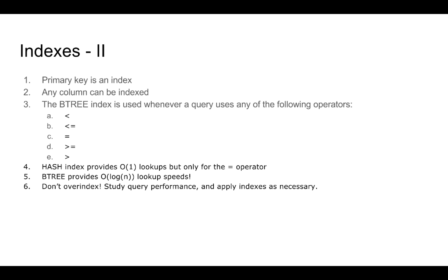In the previous modules, when we were creating primary keys on our tables, a primary key is also an index. A good primary key is a set of columns that uniquely identifies a row in a table, but it is also a set of columns used very frequently to query for data in that table. So a primary key is both a unique constraint and an index. Any column in the Postgres DBMS can be indexed. Depending on the DBMS, there might be different restrictions on what columns can be indexed, but for our exercises using Postgres, any column of any type can be indexed. There are many different types of indexes that can be used.